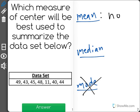The mean is what we'll use if there are no outliers. Because an outlier can greatly affect the average, or the mean, of a data set, we don't want to find the mean if there are outliers.